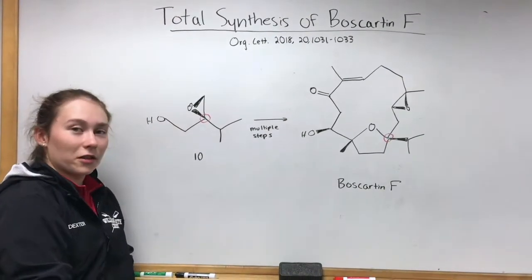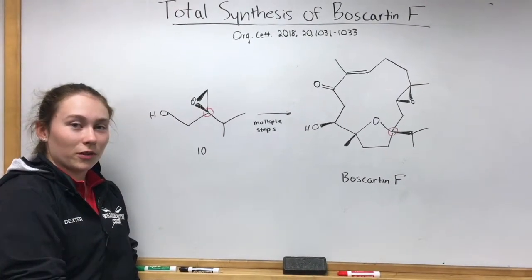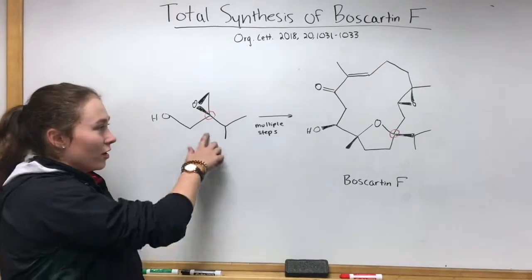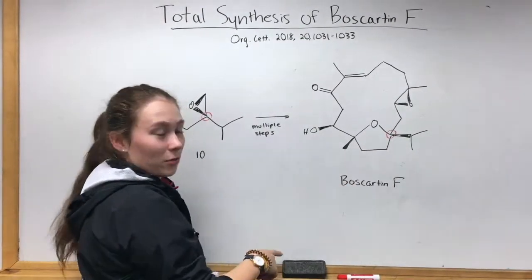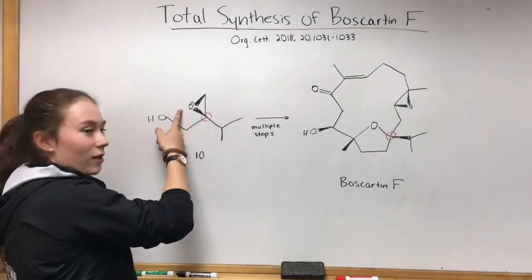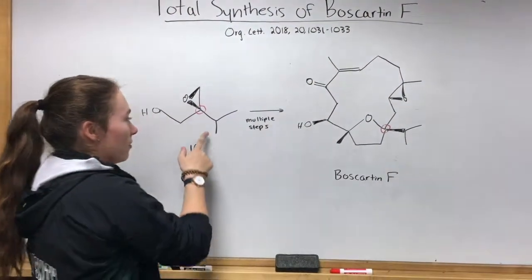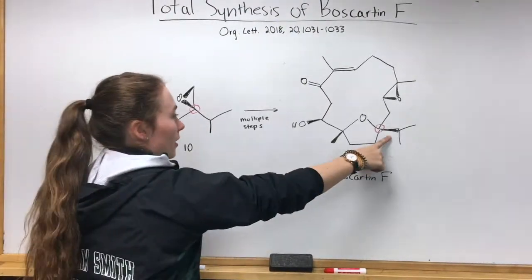In red, I have circled the stereocenter that results from the Sharpless Asymmetric Epoxidation, and then that same stereocenter in the product, Boscarin F. We see the oxygen from the epoxide right here, and then we see the isopropyl group right here.